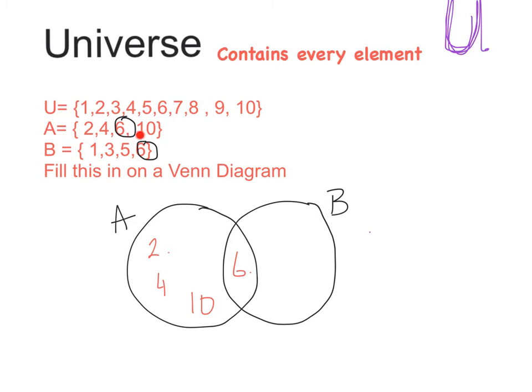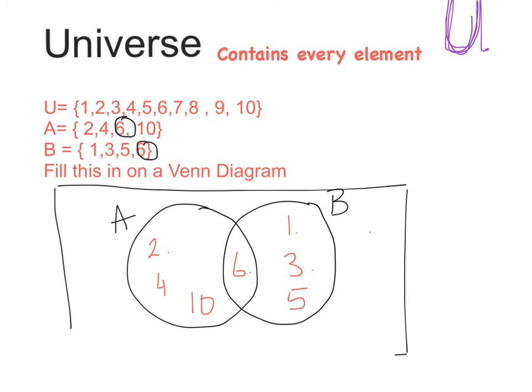And within B then, I should have 1, 3, 5, and 6. So I already have a 6. So I need a 1, a 3, and a 5. So if we look carefully now, we have placed all of the elements in A and in B and in the intersection. But the key word that we're learning today is the universe. And the universe contains every element. And how I represent this is I actually draw a large box around my two sets or my Venn diagram. And I say that this is my universe.